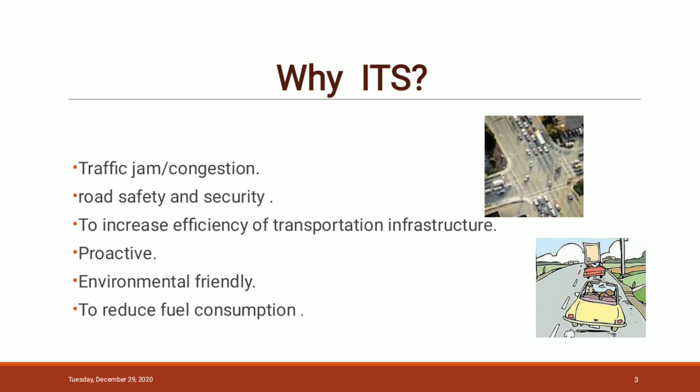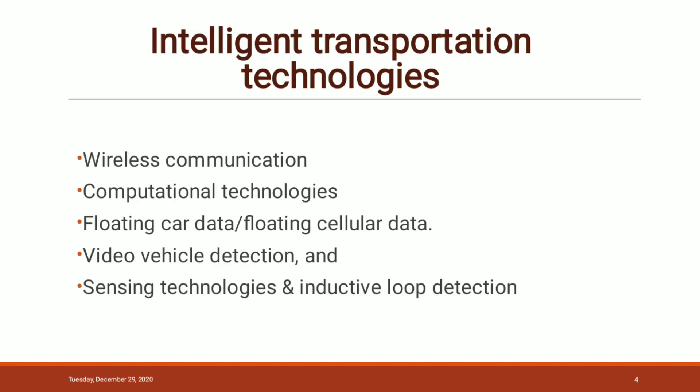What are the different types of intelligent transportation technologies? Some of these are wireless communication, computational technologies, floating car data, floating cellular data, video vehicle detection, and sensing technology and inductive loop detection method.